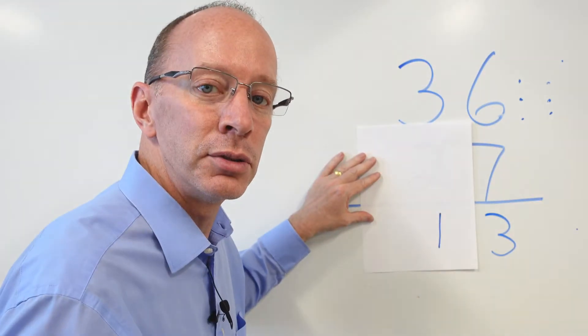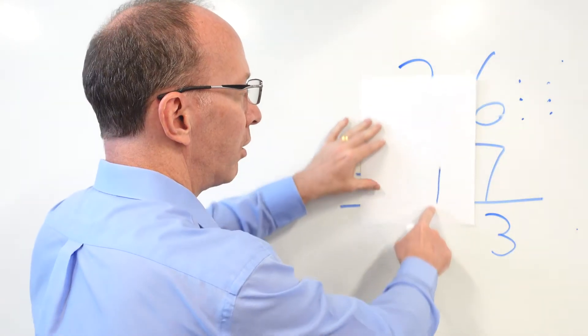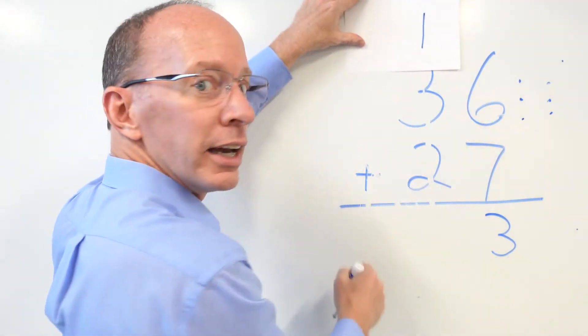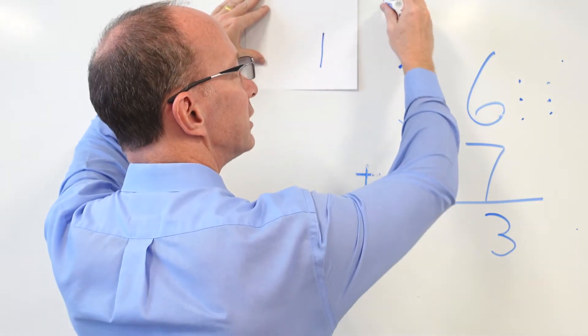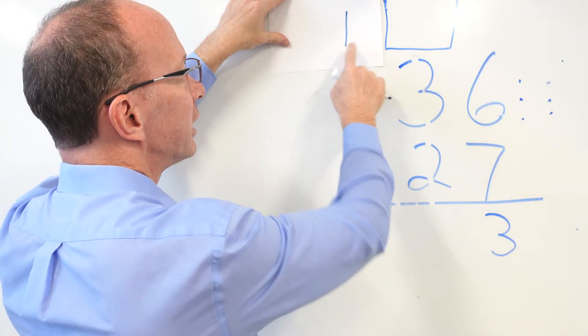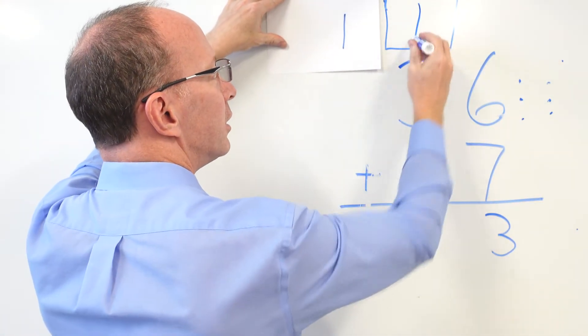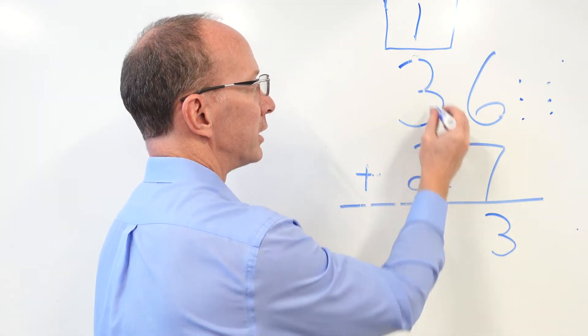I need to carry. My next step is to regroup if needed, and I need to regroup. So I'm going to take this one, and I'm going to bring it all the way up here, and I'm going to put it in my ten spot. Now, sometimes you might see a problem like this with a box right there. And so you put that ten right there. Put that one right there. Let me fix this number up. I kind of erased it a little bit.